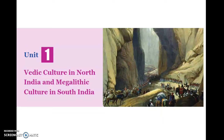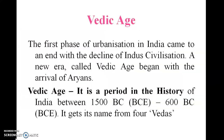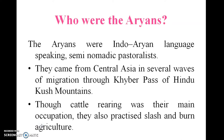Good morning students. Today we are going to see about the Vedic culture in north India and megalithic culture in south India. The first phase of urbanization in India came to an end with the decline of the Indus civilization. A new age called the Vedic age began with the arrival of Aryans. The period of the Vedic age is nearly 1500 BC to 600 BC. It gets its name from the four Vedas.